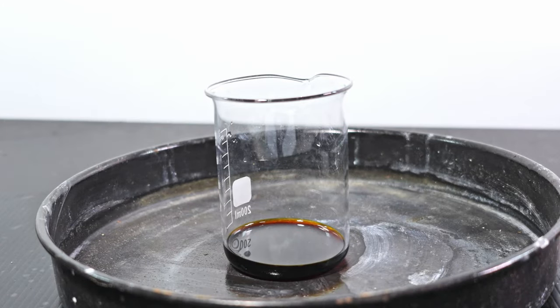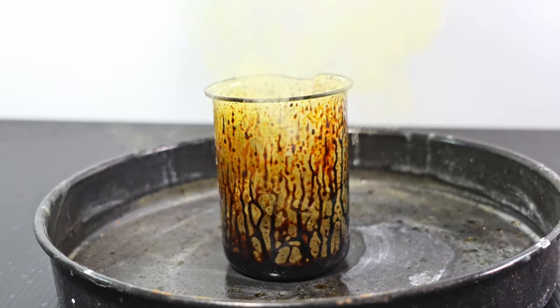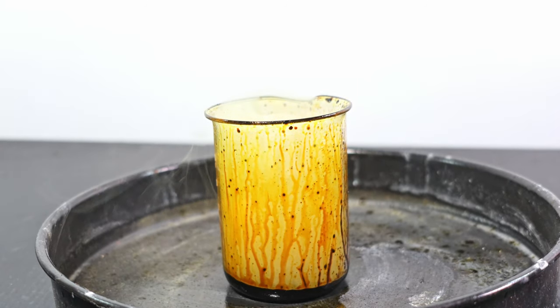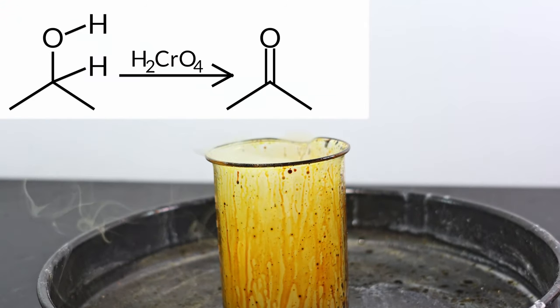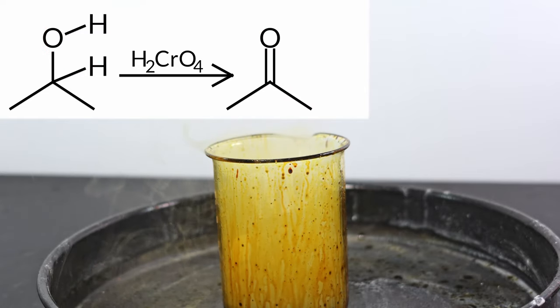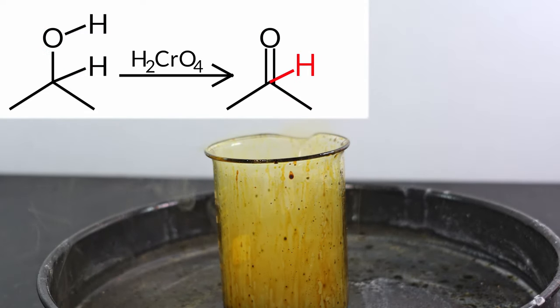For the first test, I'm going to react chromic acid with isopropanol. The reaction happened because the hydroxyl group is susceptible to oxidation. The chromic acid oxidizes the alcohol into acetone. It cannot be oxidized anymore because there are no more hydrogens on the functional group, meaning there are no more hydrogens on the carbon bonded to the oxygen.